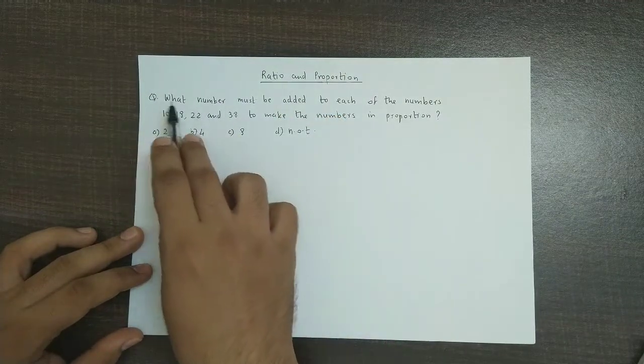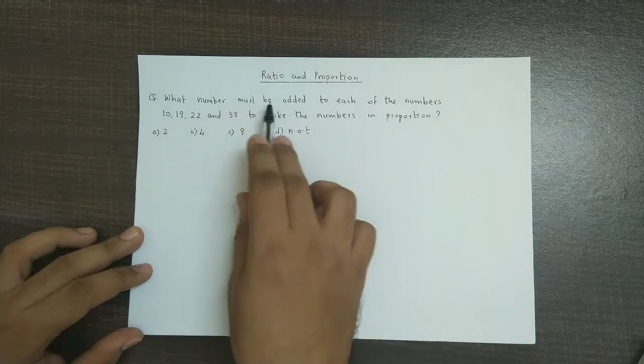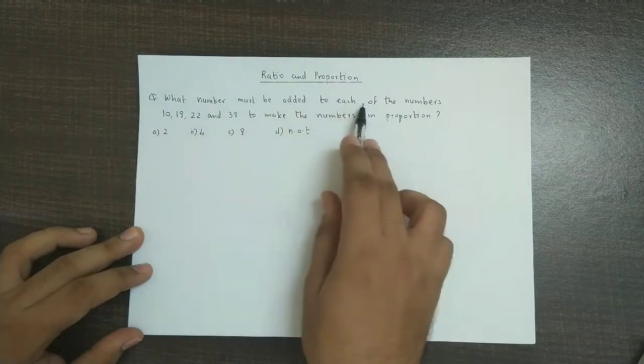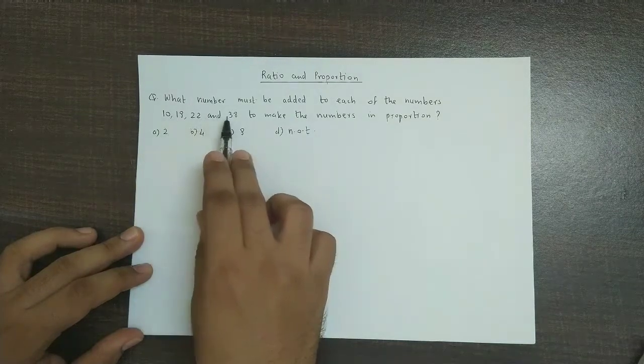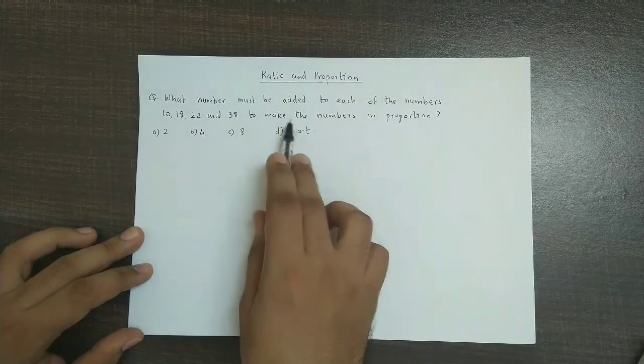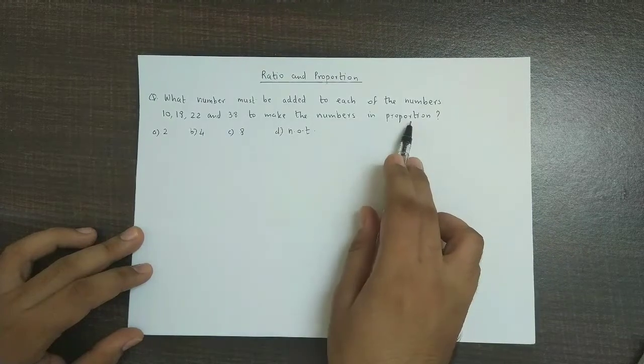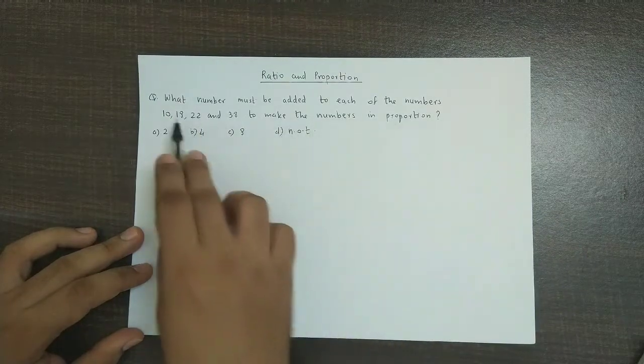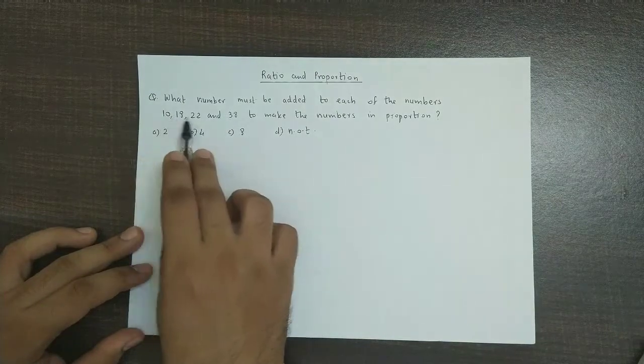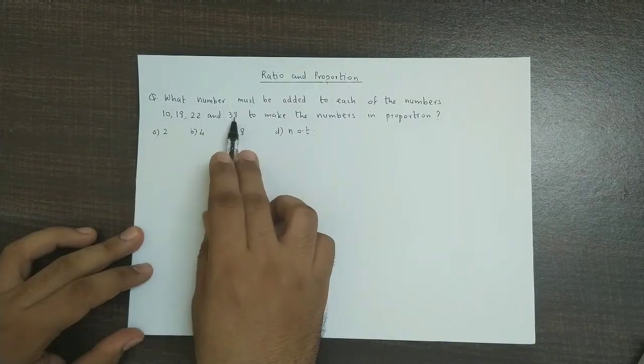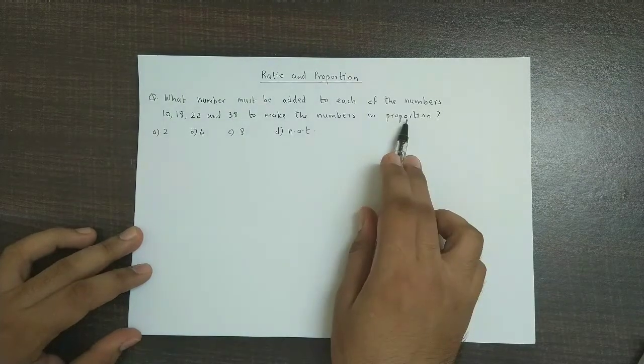The question is what number must be added to each of the numbers 10, 18, 22 and 38 to make the numbers in proportion. So we have to add a quantity to all of these, that is each of the four numbers, so that the resulting quantities are in proportion.